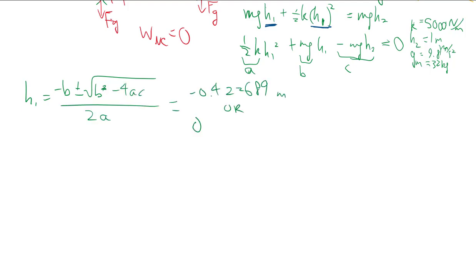But those are our two answers. Remember though, we expect h1 to be negative. So we don't always pick the positive, because in this case it's the negative that makes sense. So at the bottom when the trampoline is stretched out the most, it's 0.42 meters below where it was flat.